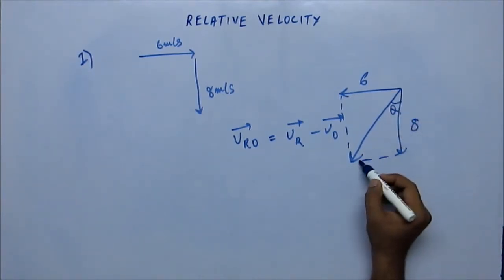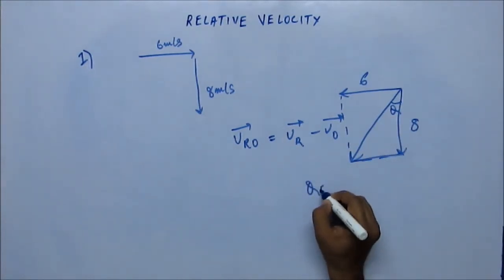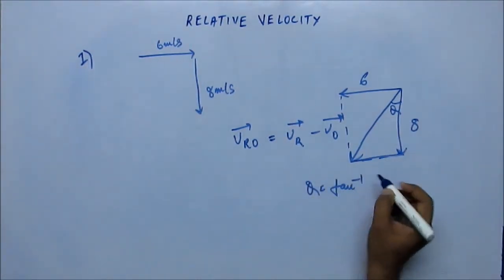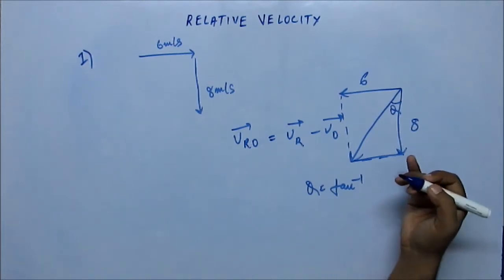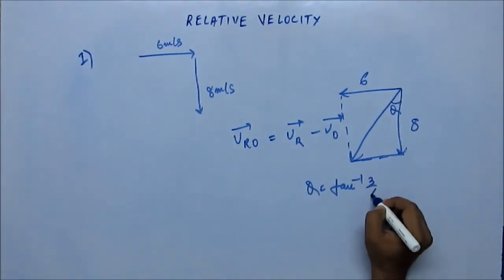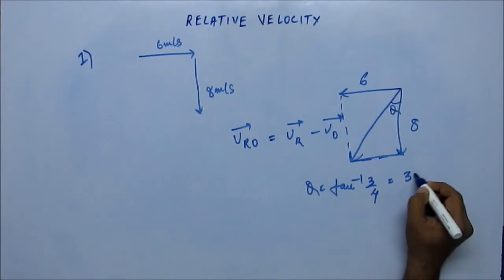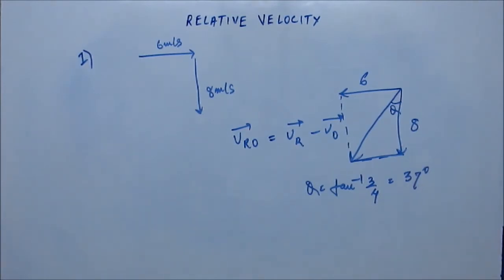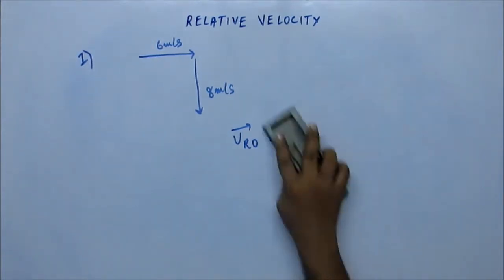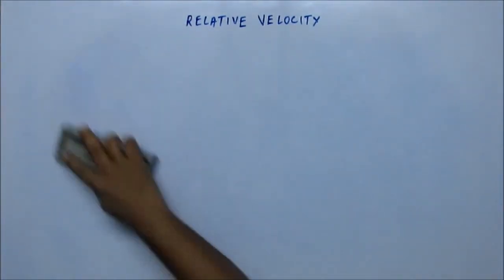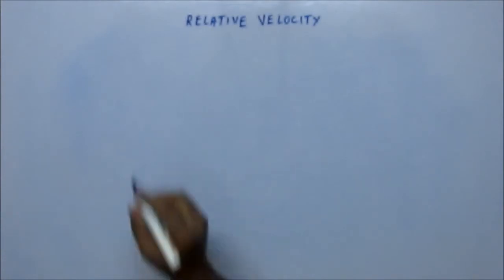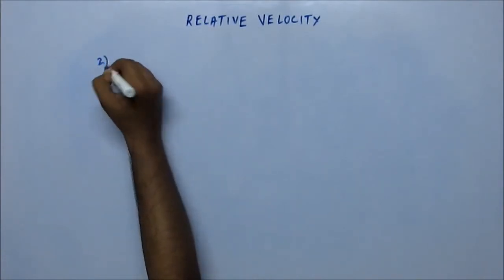This is the angle we are looking for. This theta is tan inverse perpendicular 6 upon base 8, that is 3 by 4. Tan inverse 3 by 4 is 37 degrees. Tan inverse 4 by 3 is 53 degrees. That's the angle you have to put the umbrella at.